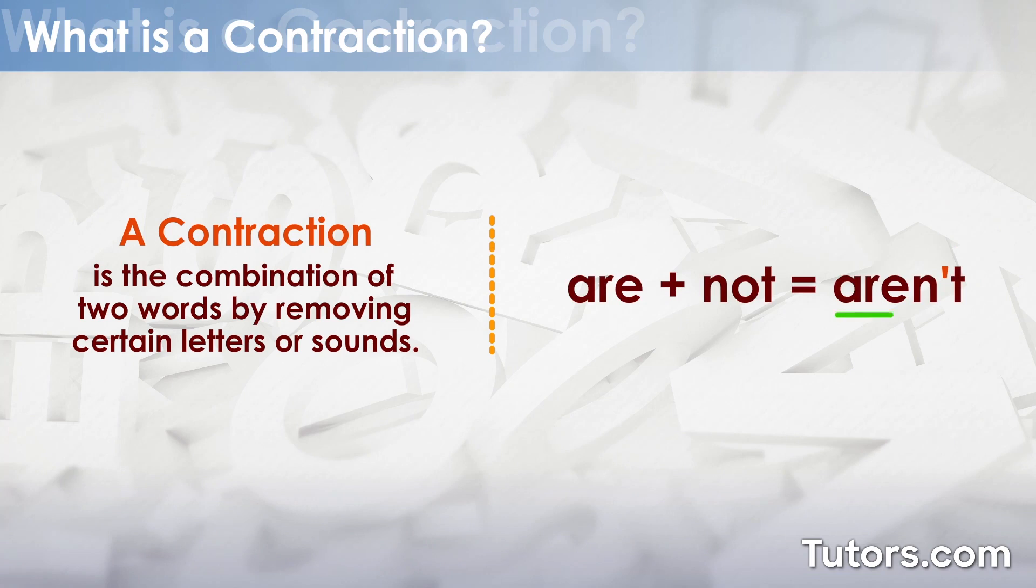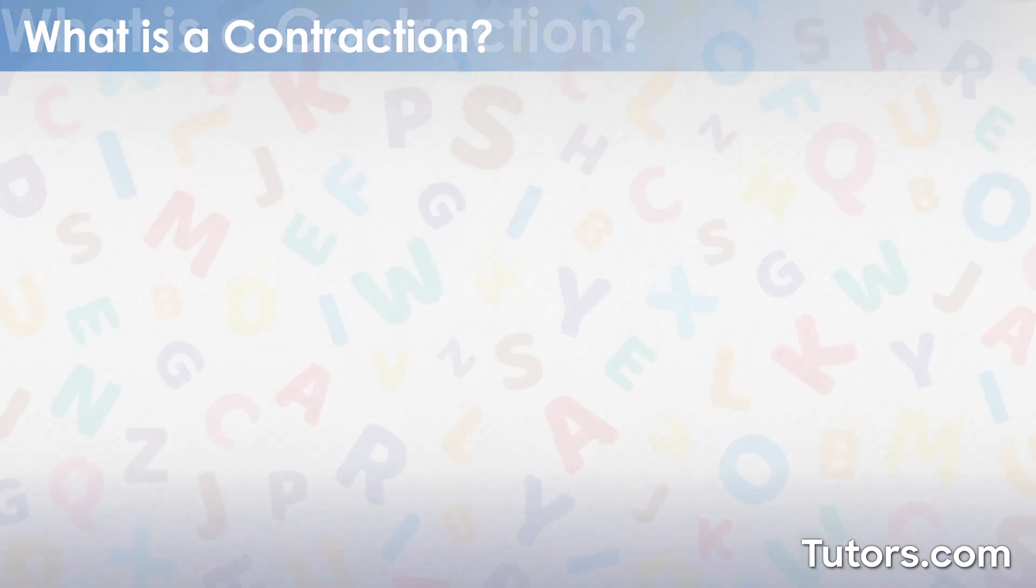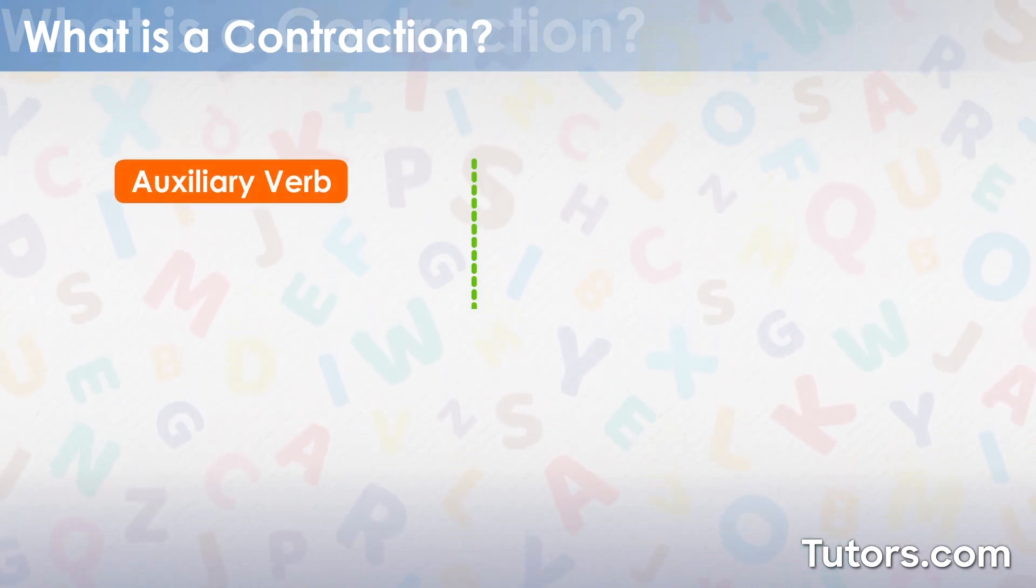Consider the contraction aren't. The apostrophe replaces the removed O in the combination of are and not. The most commonly used contractions typically include auxiliary and modal verbs attached to other words.